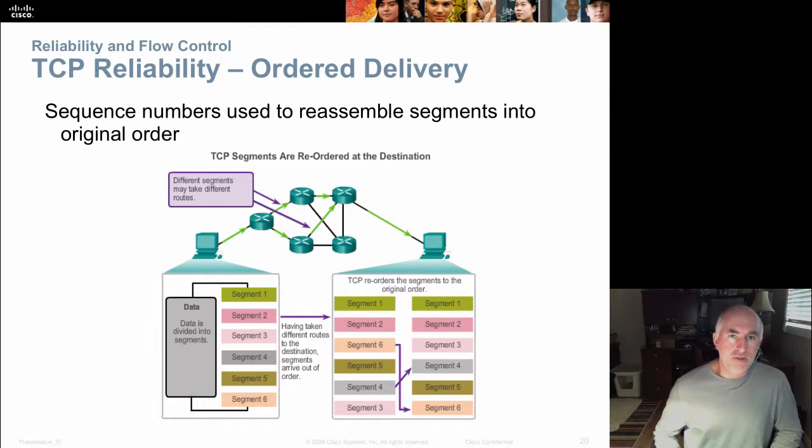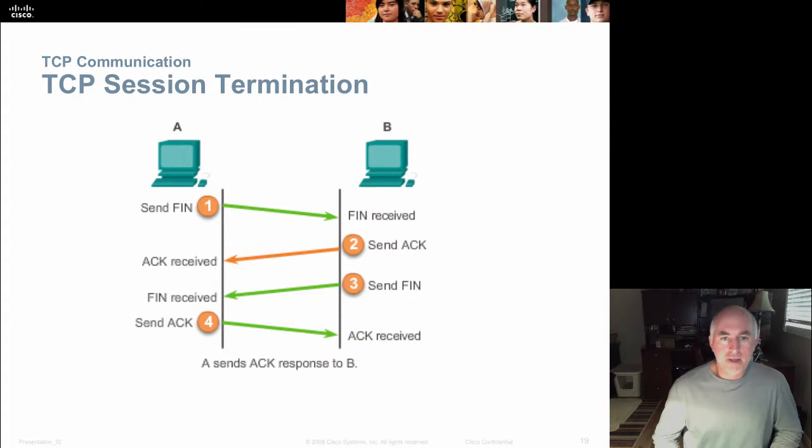I should explain why it's a three way. So look at two and three, see the bubbles that say two and three, those come in the same segment. I can send an acknowledgement in the same segment that I set the FIN flag. So one is sent in its own segment, then two and three come back together in one segment. And then four is in its own segment. So there's an exchange of three segments. So that's why they call it the three way handshake.